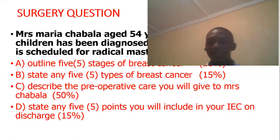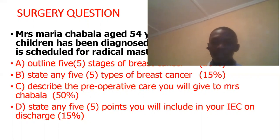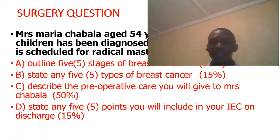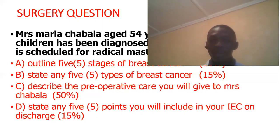At stage one, the growth is mobile and less than two centimeters. During breast examination you can feel a node inside the breast; it is mobile meaning it moves around, and it is less than two centimeters in diameter. At stage two, the lump becomes fixed to the breast and is more than two to five centimeters.